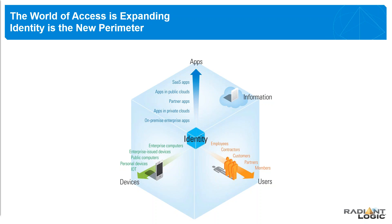What do I have left that I can control? Really, the only thing that's common across all three of these areas — users, applications, and devices — that you can still exercise control around is identity. Identity has become the new perimeter. Where it was the firewall or the physical building, now it's actually your identity. Wherever it goes, if I know enough about it and have enough contextual information and policies in place, I can still secure that interaction and make sure the right person gets the right access at the right time.